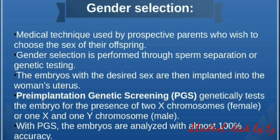Now we are going to start with gender selection or sex selection. This is a medical technique which parents use when they wish to choose the sex of their offspring — male or female. This technique involves sperm separation or genetic testing. We fertilize sperm and egg to create an embryo of the desired sex, then implant it in the uterus.